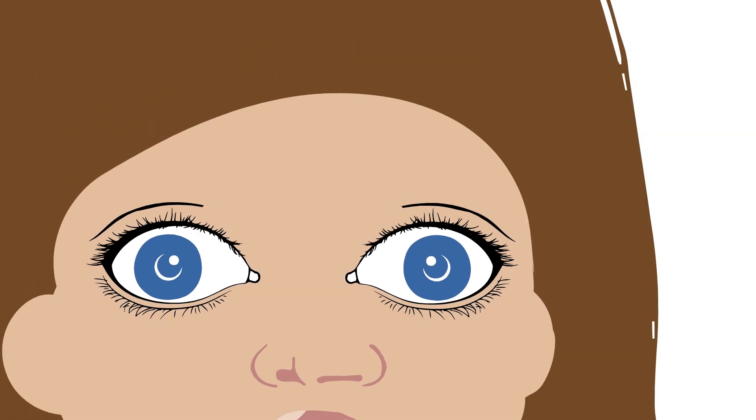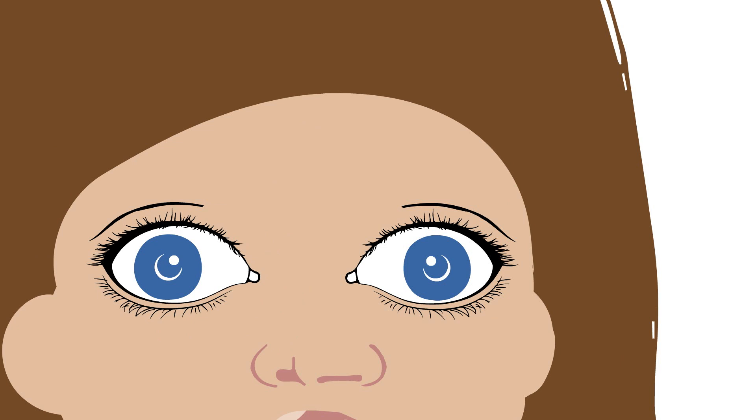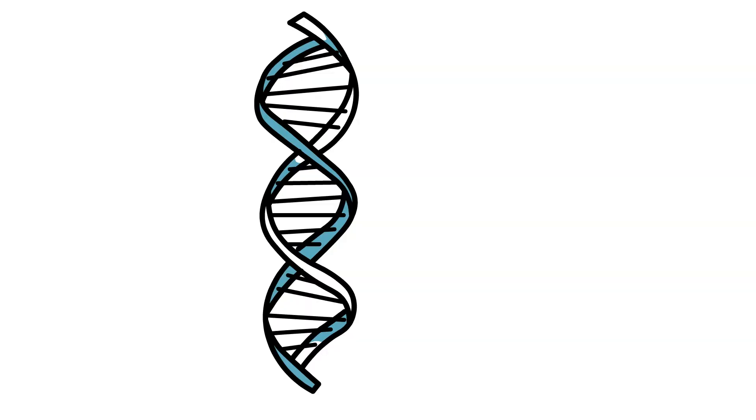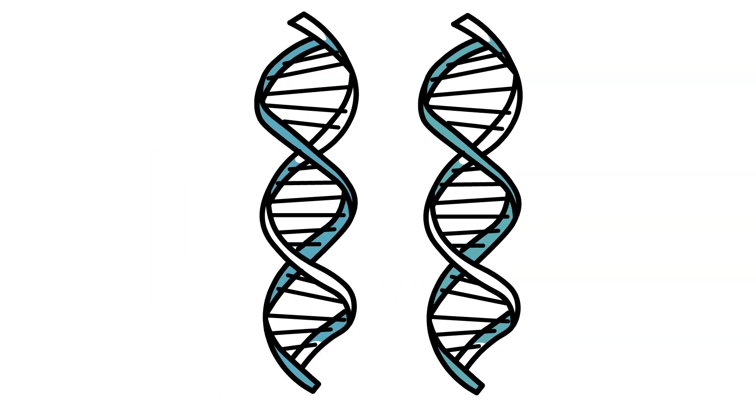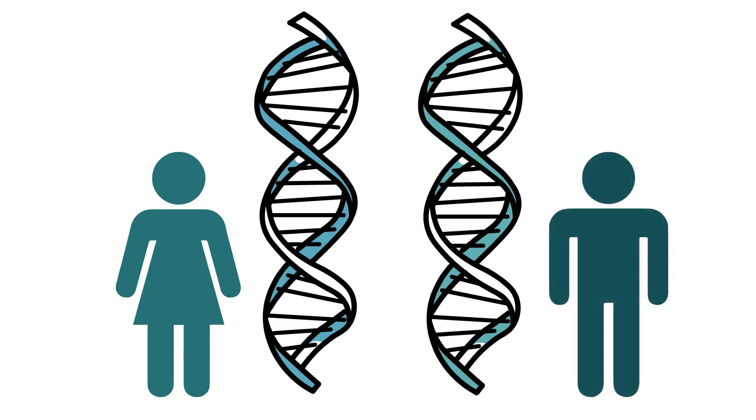There can be several versions of a single gene which give different instructions. One might cause a person to have blue eyes, another might cause them to have brown eyes. A person has two copies of each gene, one from their mother and one from their father.